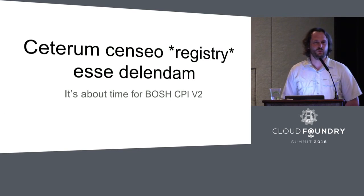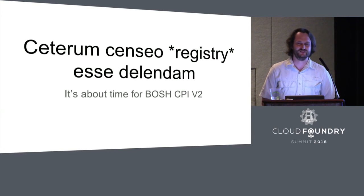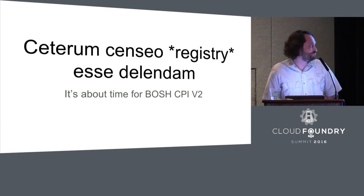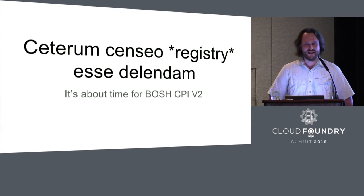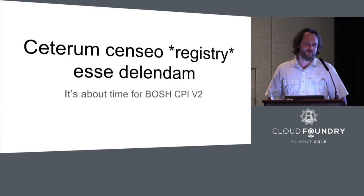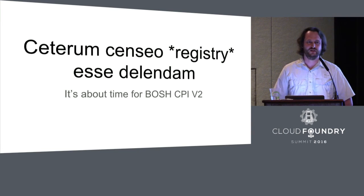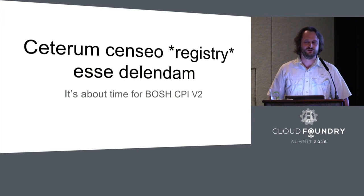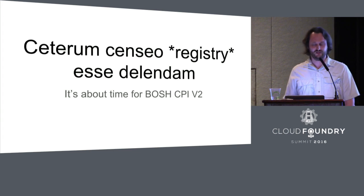Let me close with a quotation of Cato the Elder, who wanted to have Carthage destroyed. I'm aware this probably took Cato quite some time to get through the Roman Senate — he said it whenever he had a speech — and the Third Punic War took quite some time. But we actually have it on BOSH notes: plans for a BOSH CPI version 2 that would get rid of the registry and NATs, so we should just do it. That's all from me. Thanks for listening.